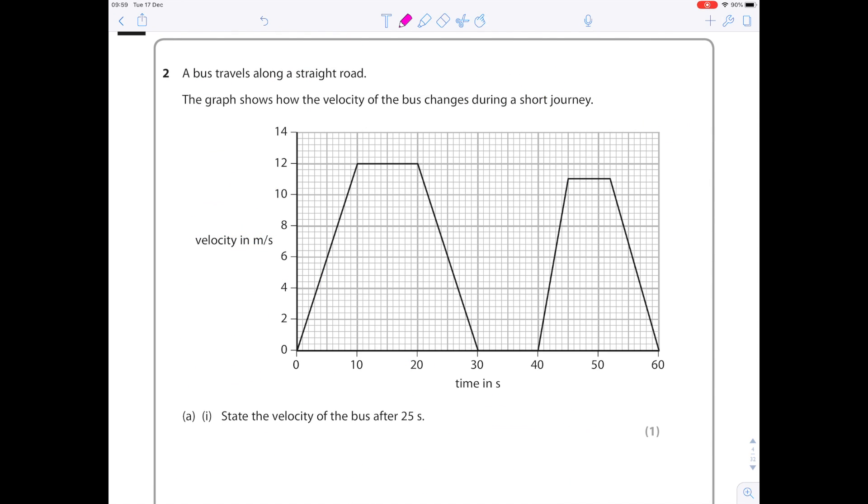I want to show you how well that equation sheet works by looking at question two. Bus travels along a straight road, the graph shows how the velocity of the bus changes during a short journey. We have a velocity time graph which means that distance is given by the area under the graph line and the acceleration is the gradient.